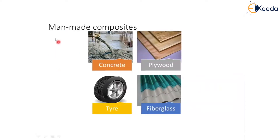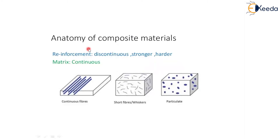If we look at man-made composites, concrete is the best example — it is a particulate reinforced composite and can also be a laminar composite. Plywood is a classic example of structural composites, built layer by layer for strength. Tires are also made with composite materials to increase wear and tear resistance. Fiberglass is another important invention with many applications.